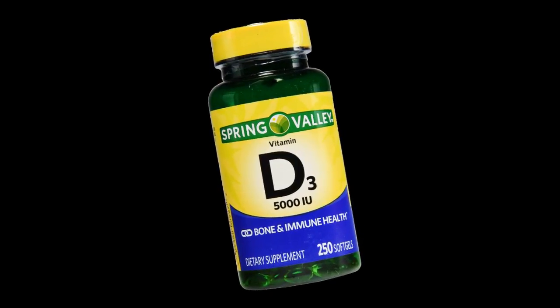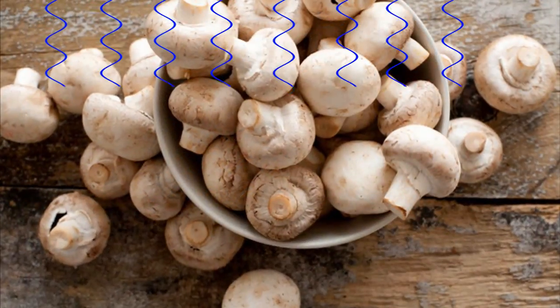Before we get into supplementation, there is one more form of vitamin D we need to discuss, namely vitamin D2, also known as ergocalciferol. The term ergo is derived from the word ergot, or fungus. This form of vitamin D is produced in plants exposed to UV light, predominantly mushrooms, hence the name.